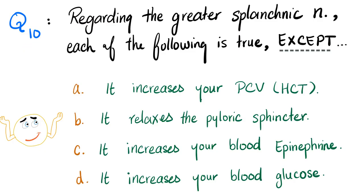Let's answer the question of the previous video. Regarding the greater splanchnic nerve, which is sympathetic by the way, each of the following is true except: it increases your hematocrit. Yes, because it squeezes your spleen to release red blood cells in the circulation. This will increase your packed cell volume or your hematocrit value. So A is true. Therefore, it's not the answer because we're asking about except.